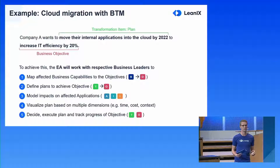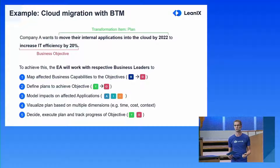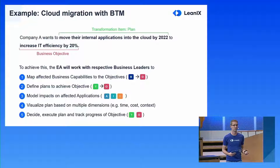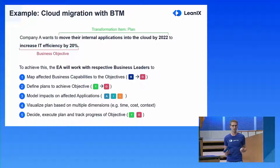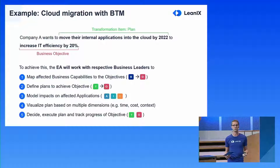To achieve that, we first need to map the affected business capability to the objective to understand where in your organization you're following a certain goal. In the second step we need to define plans to achieve those objectives, and in the next step you have to model all the impacts on the affected applications or IT components.